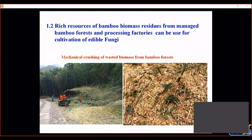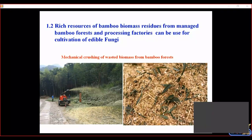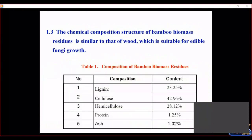Second, there are rich resources of bamboo biomass residues from managed bamboo forestry, and the processing factories can be used for cultivation of edible fungi. Third, the chemical composition structure of bamboo biomass residues is similar to that of wood, which is suitable for edible fungi growth.